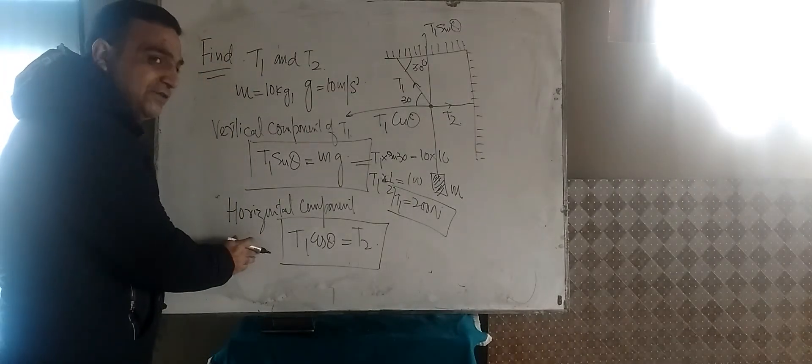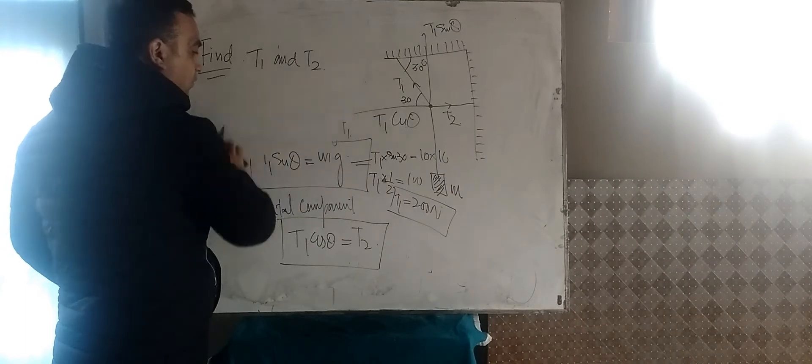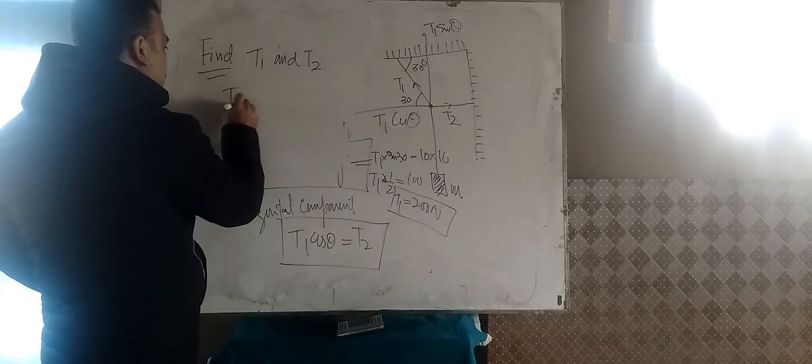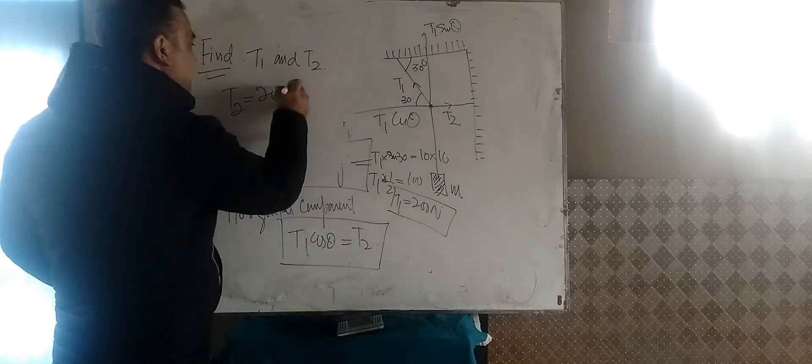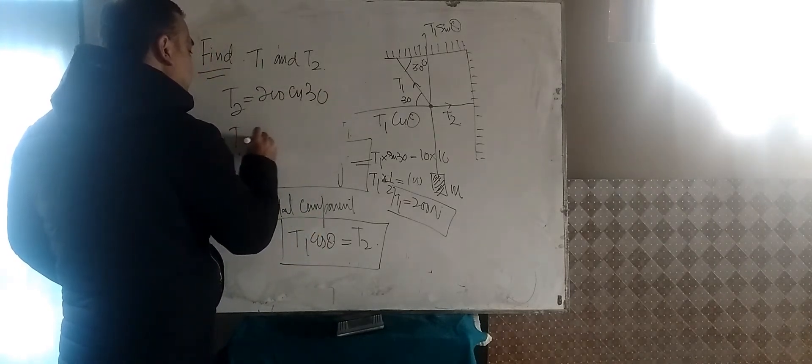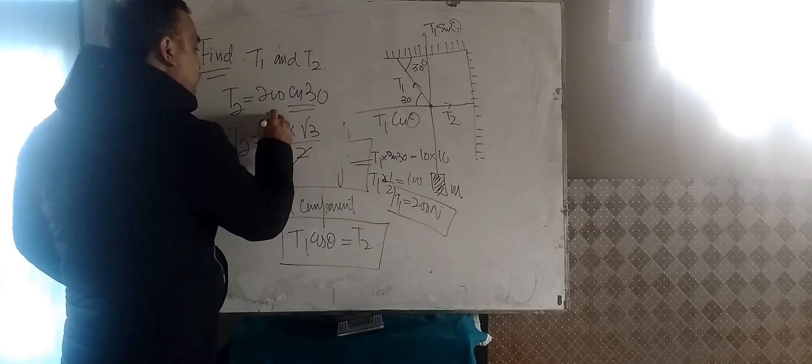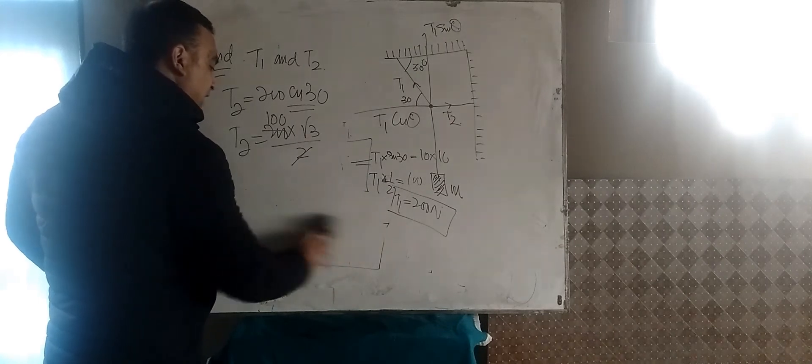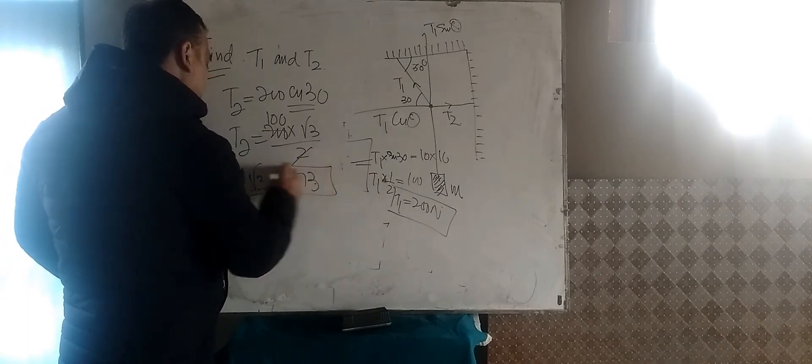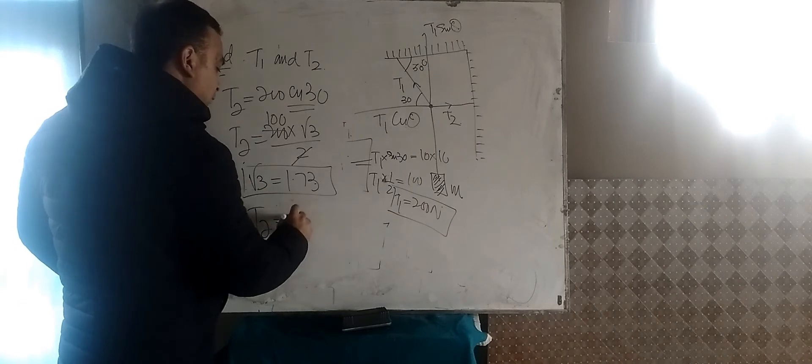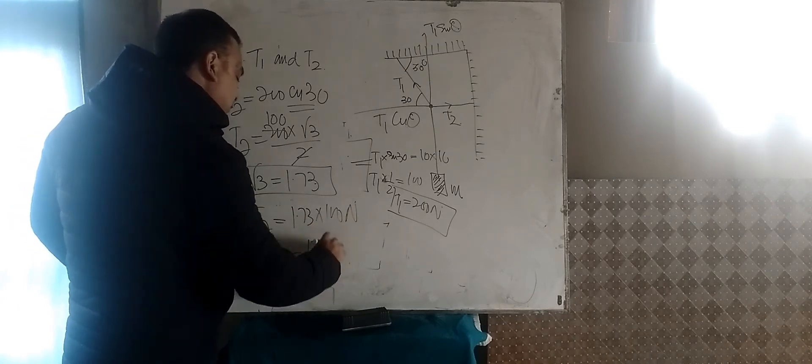This is the value of T1 that has been calculated. Similarly, we can calculate the value of T2 from this equation because we already know what is T1. What will be T2? T2 will be T1. How much is T1? 200. Cos theta, that means cos 30. So T2 must be equal to 200 times cos 30 is root 3 by 2. I think root 3 is equal to 1.73. So T2 must be equal to 1.73 into 100 newtons. So T2 must be 173 newton.